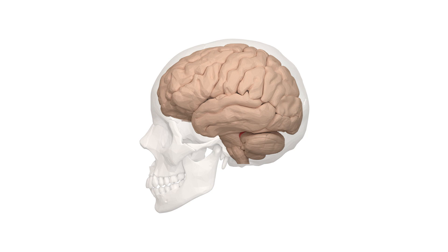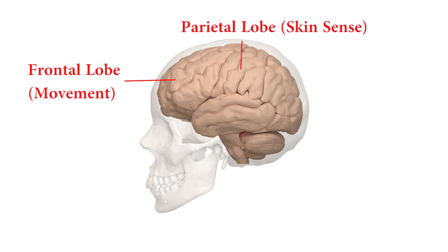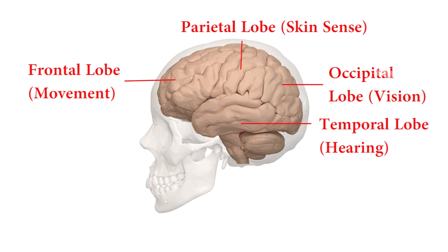As a major division, the brain's cerebral cortex is divided into four lobes: frontal lobe, parietal lobe, occipital lobe, and temporal lobe.